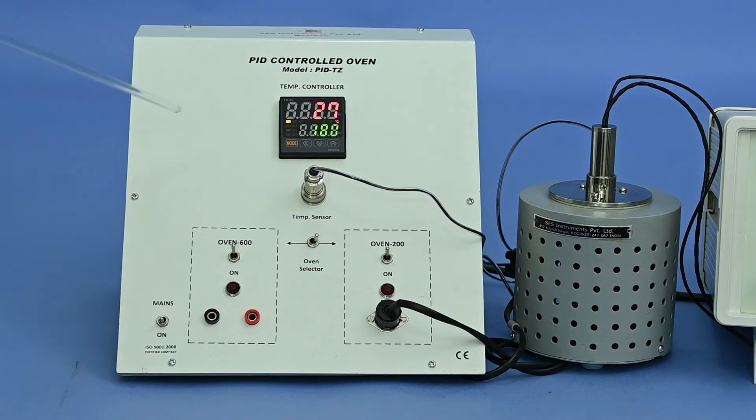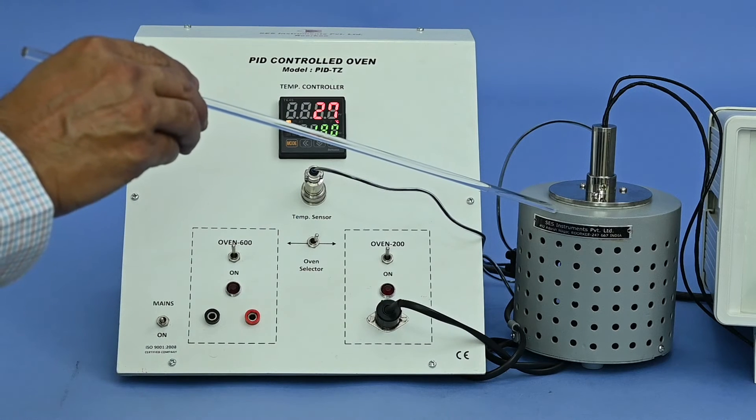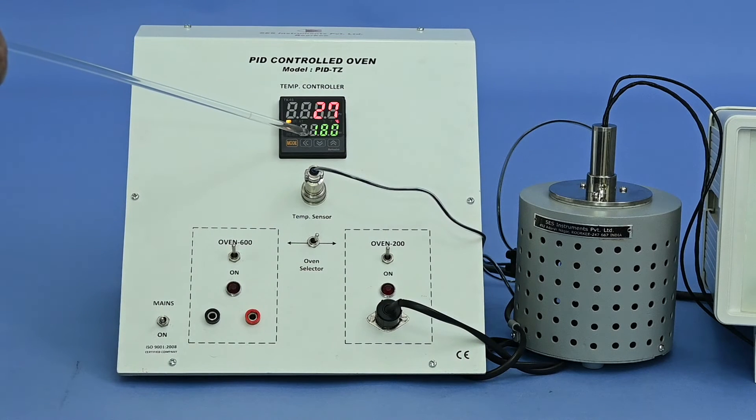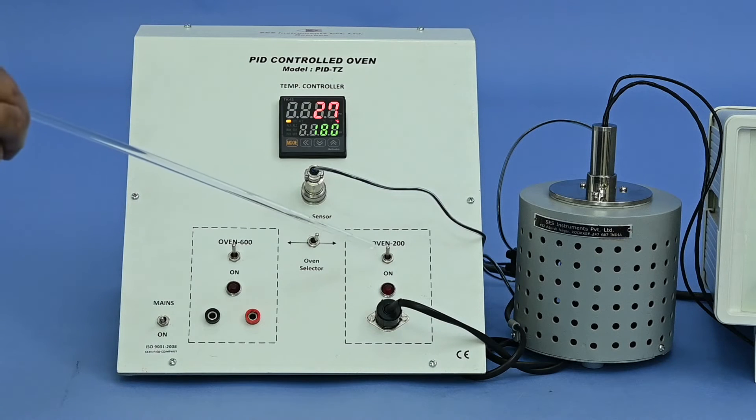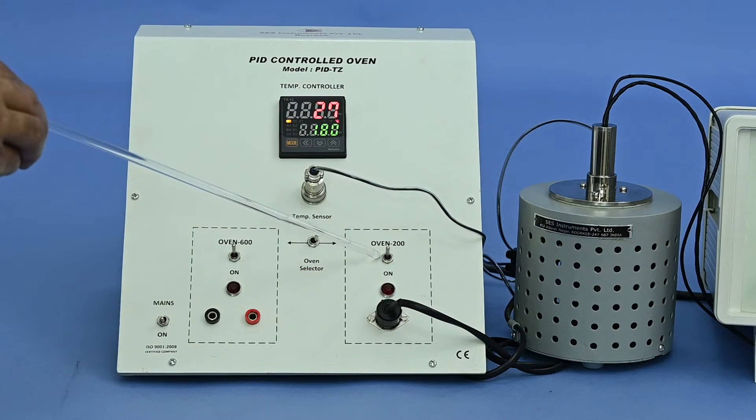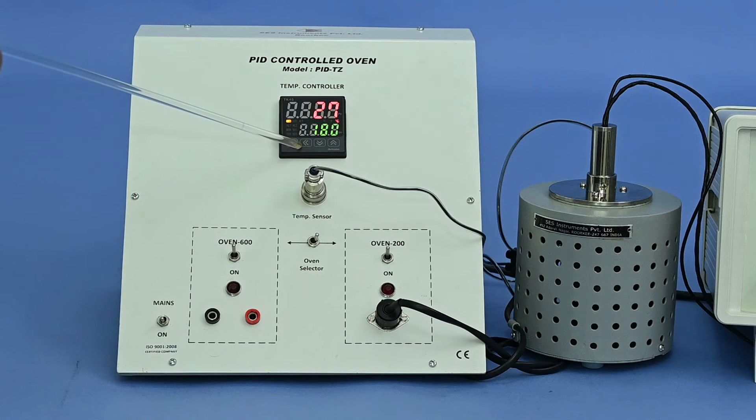The PID controller unit shows two temperatures: PV and SV. PV shows the chamber temperature and SV is the desired temperature. You can set it here. At the time when you set the desired temperature, oven should be off, and it can be set with these three arrow keys.